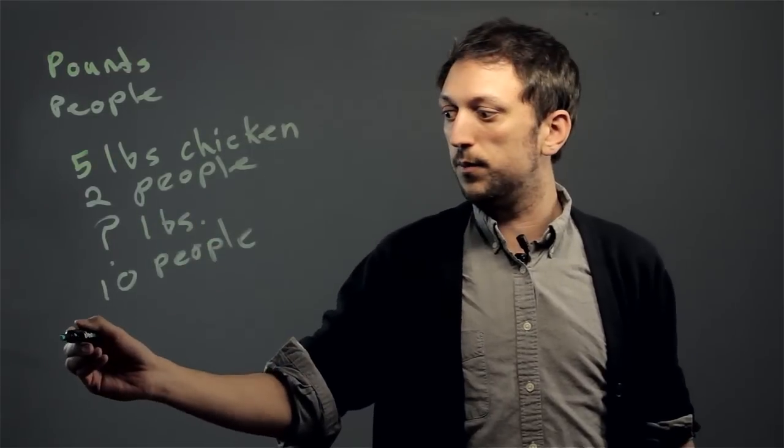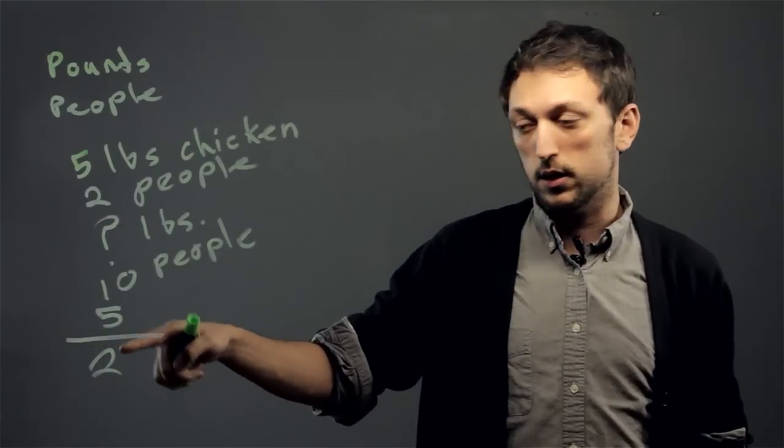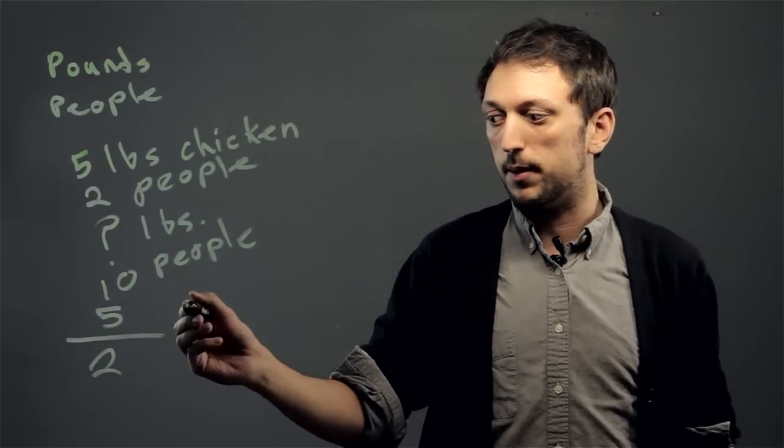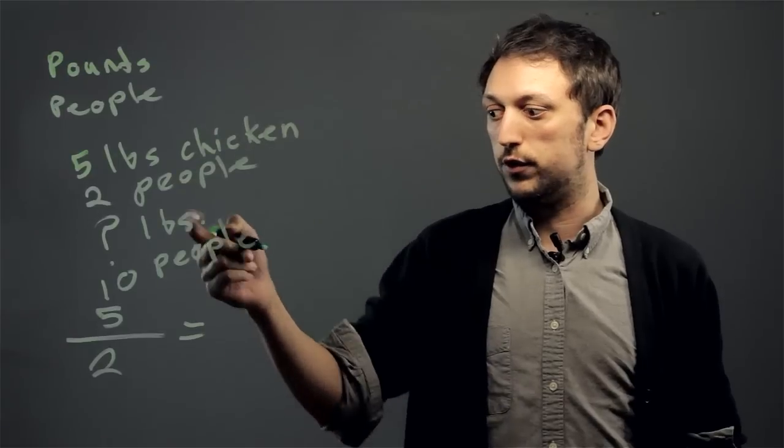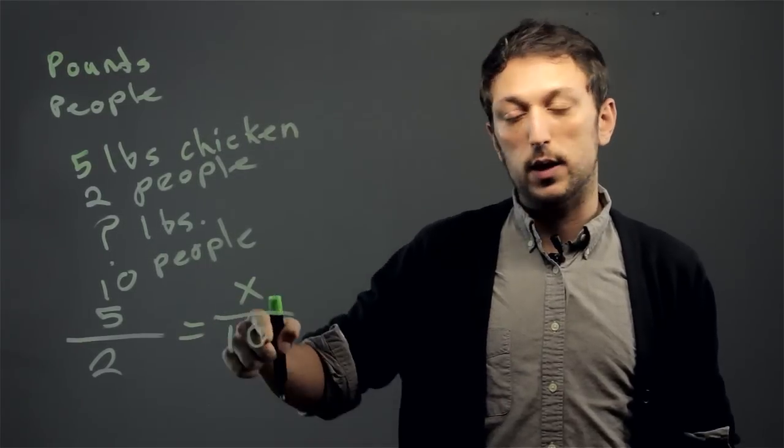Well, we would set up the fraction five over two, so now we've committed pounds on top, people on the bottom, and we'd say that's equal to x, which is our question mark, over ten. And so now we can cross multiply and find our answer because we're leaving pounds on top in both places.